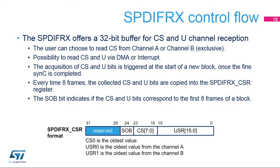The SPDIF-RX offers a 32-bit buffer for the reception of the CS and U channels. The application can read the received control information in the SPDIF CSR register using DMA or interrupts. The SPDIF CSR register contains 8 bits of CS from the selected channel (A or B), 16 bits of U — the U-bit of channel A and U-bits from channel B — and 1 bit indicating if a start of block has been detected.